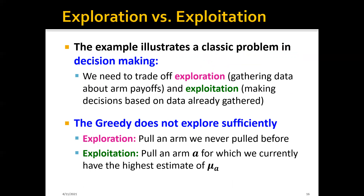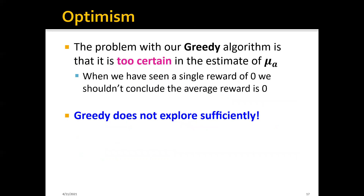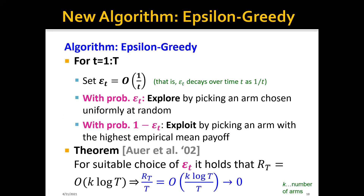The greedy algorithm does not explore sufficiently. Exploration means pulling an arm we have never pulled before, and exploitation simply means pulling the arm for which we currently have the highest estimate of average payout. If you keep exploiting, that's the original greedy algorithm. The problem with the greedy algorithm is that it's too certain in its estimate of mu. When we've seen a single reward of zero, we shouldn't conclude that the average reward of A2 is zero — that's not the smart thing to do.